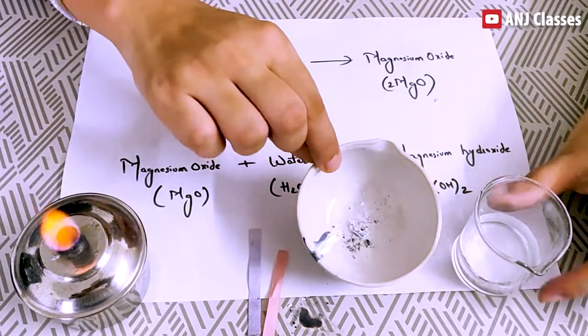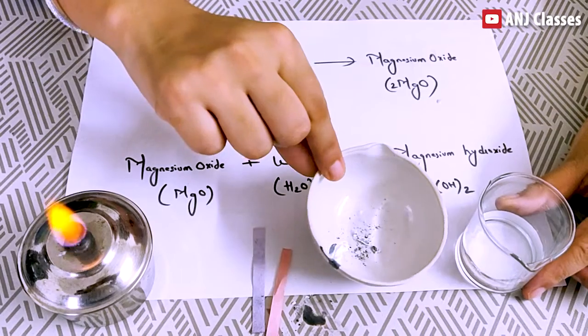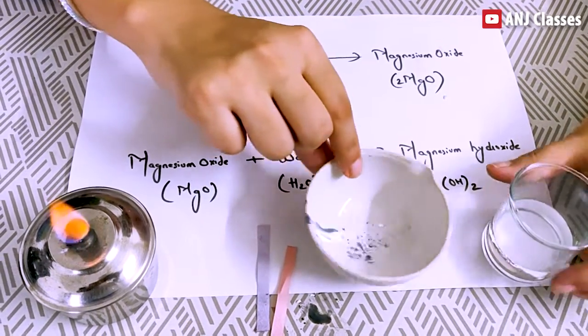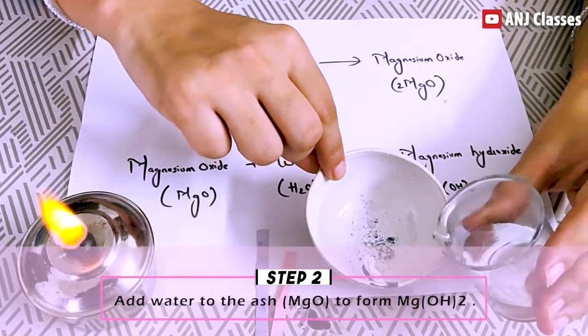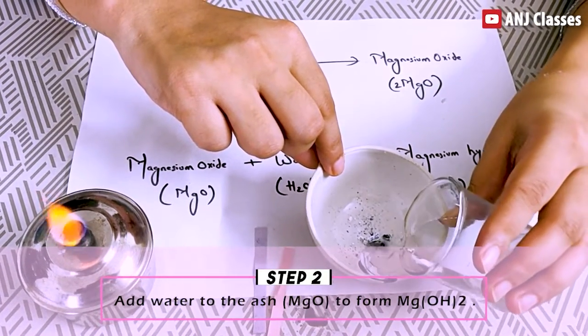Now you can see here it is magnesium oxide and now I will add few drops of water to form magnesium hydroxide.